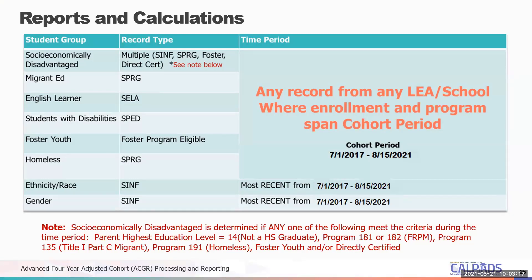For example, if you had a student who was homeless three LEAs ago in ninth grade but hasn't been homeless since, they'll still show up as homeless on your cohort report because they were homeless within that four-year cohort period. Ethnicity, race, and gender come from the student information file — the SIMF file — and that's the most recent record in the last four years. So if something changed in the last record uploaded, that's what shows up on your cohort report.